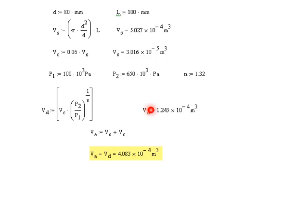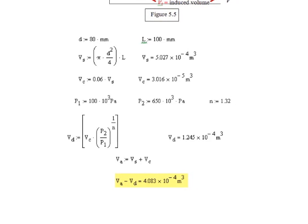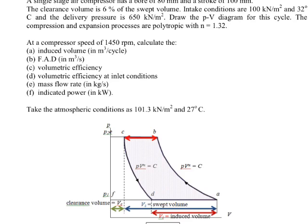Note that Va minus Vd is in fact the induced volume at inlet conditions where the inlet pressure is 100 kN/m². Let's move to the question now. We have worked out the first answer: the induced volume in cubic meters per cycle.